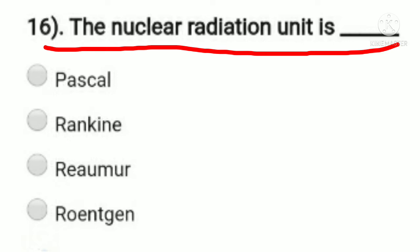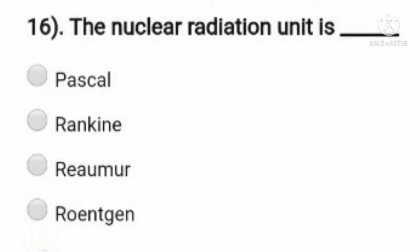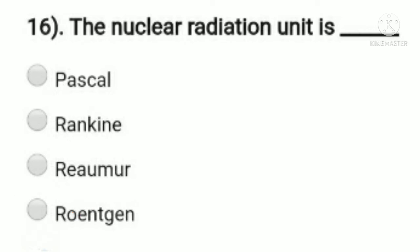Question 16: the nuclear radiation unit is — option A: pascal, option B: rankine, option C: reaumur, option D: roentgen. Pascal is the unit of pressure, and the other options are different units. The unit used for nuclear radiation is the roentgen. So option D, roentgen, is the right answer.